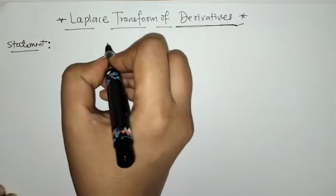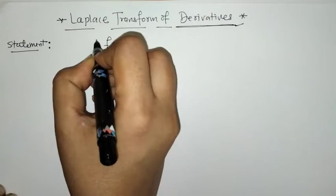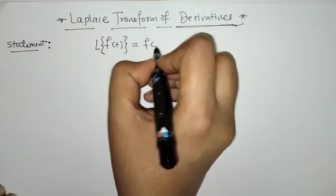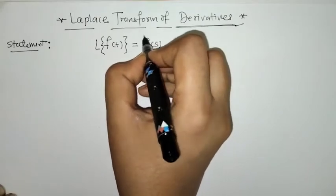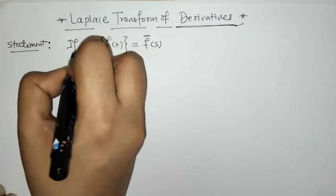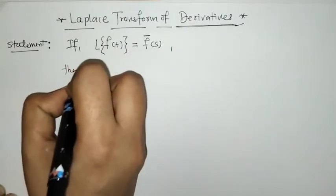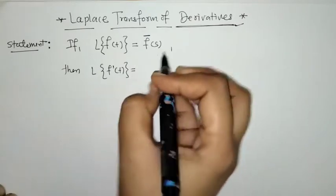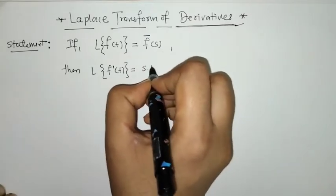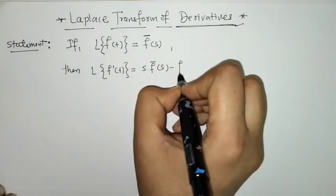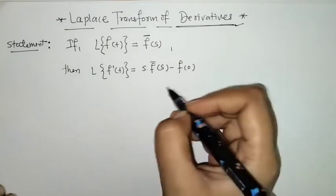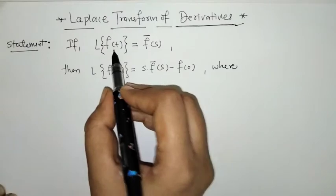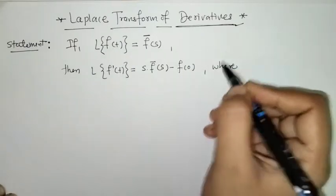First, when we have a function f of t and we know its Laplace transform, this is given by f of s — we will denote this as f-bar of s. Then the Laplace transform of f-dash of t is given by s into f-bar of s minus f of 0, where f of 0 is obtained from f of t by putting t equals to 0.